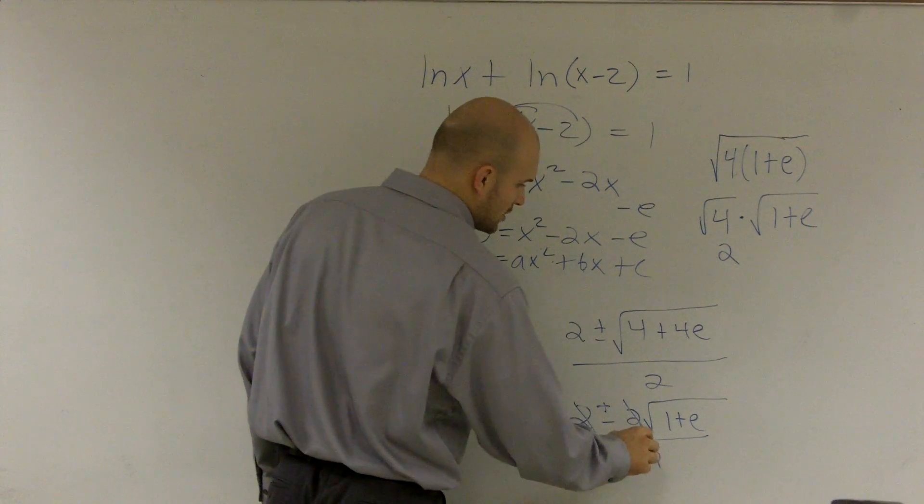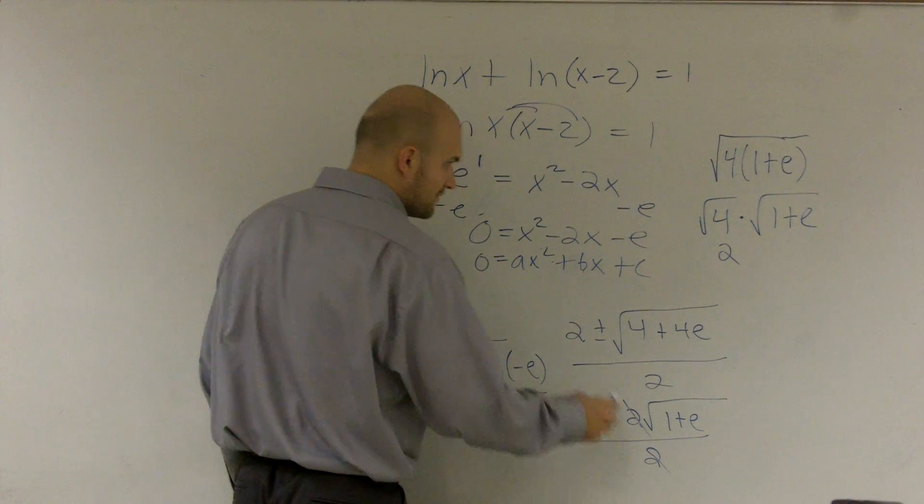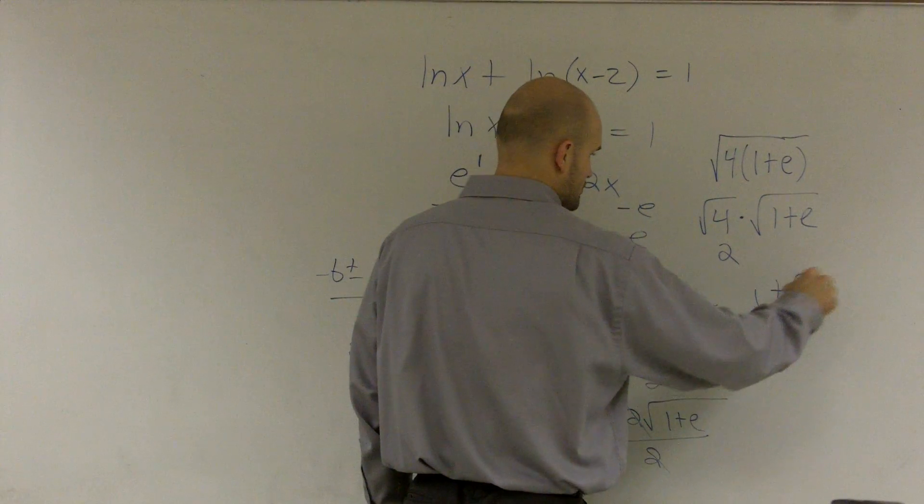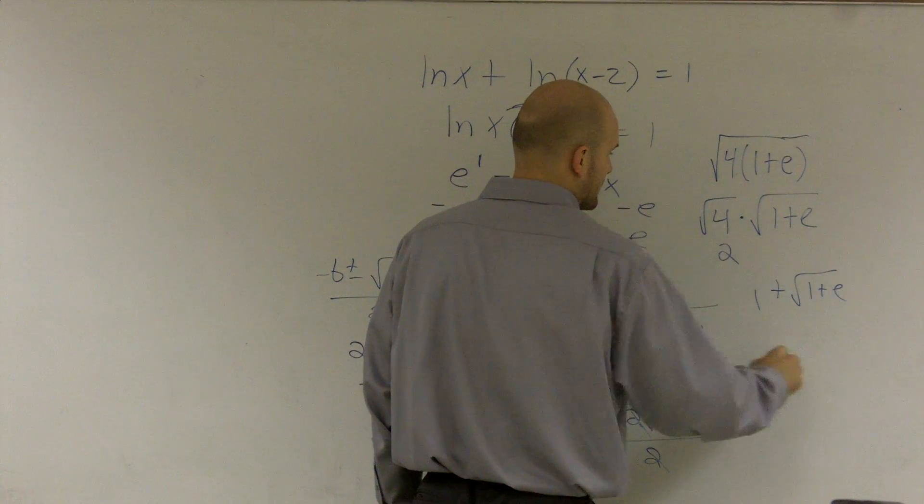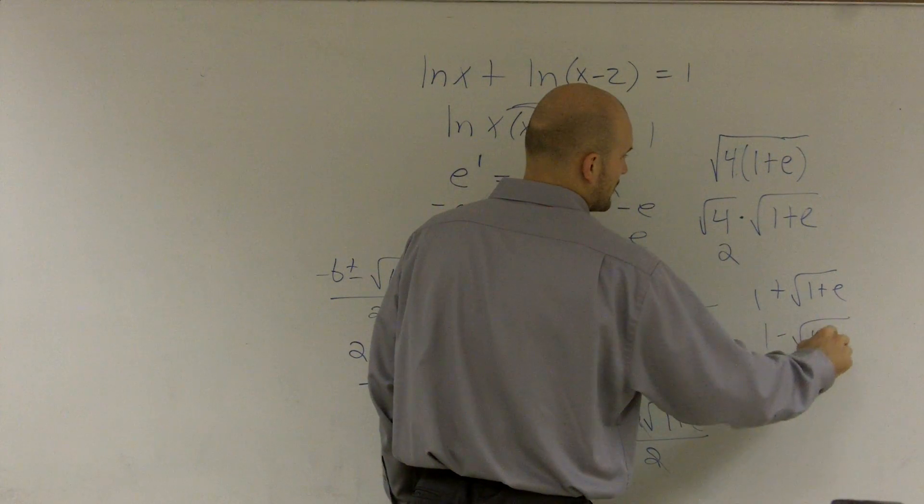Well, what we notice is that these are all going to cancel out. And therefore, my final answer is 1 plus the square root of 1 plus e and 1 minus the square root of 1 plus e.